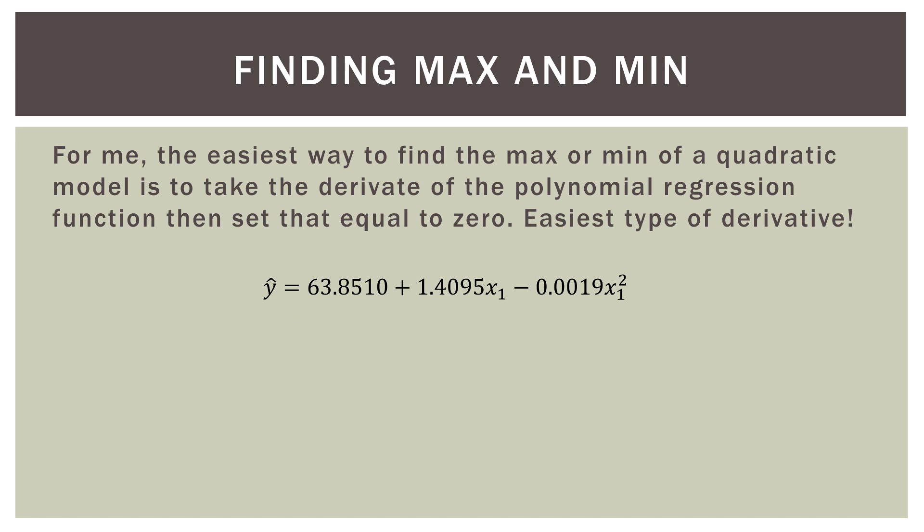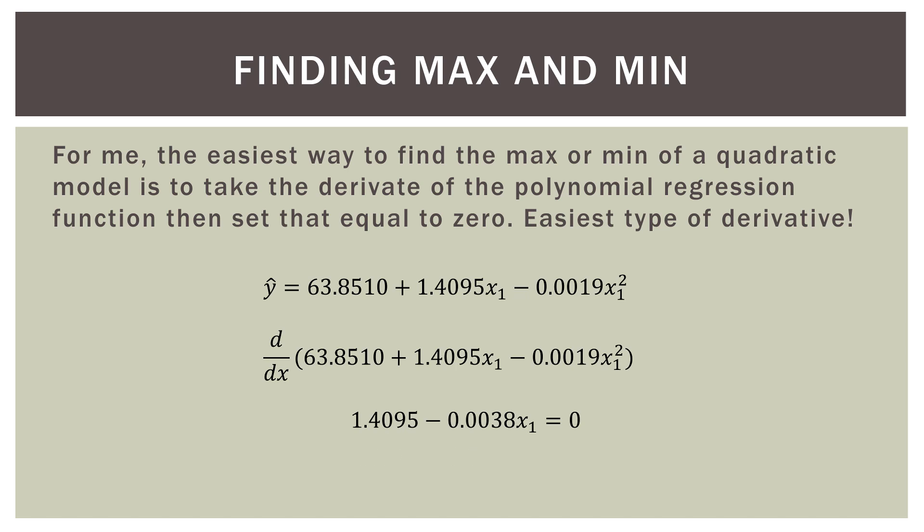Here is our quadratic regression equation. We take the derivative: the constant goes away, the power of x-sub-one becomes a constant of 1.4095, and for the squared term we bring the exponent out front — times two — giving 2 × 0.0019 = 0.0038, then reduce the power by one. So we get 1.4095 minus 0.0038·x-sub-one. Setting that equal to zero, we solve for x-sub-one and get a value of 370.92.